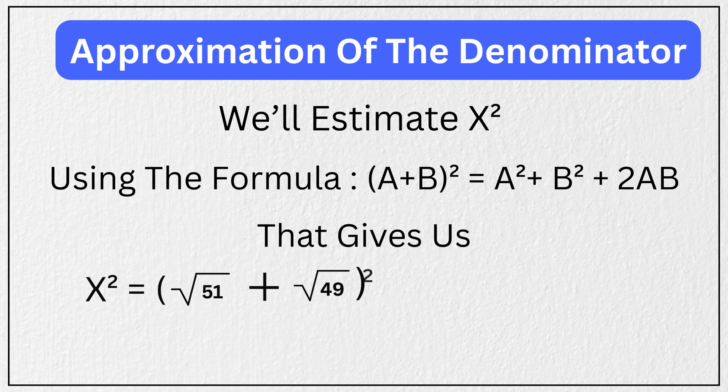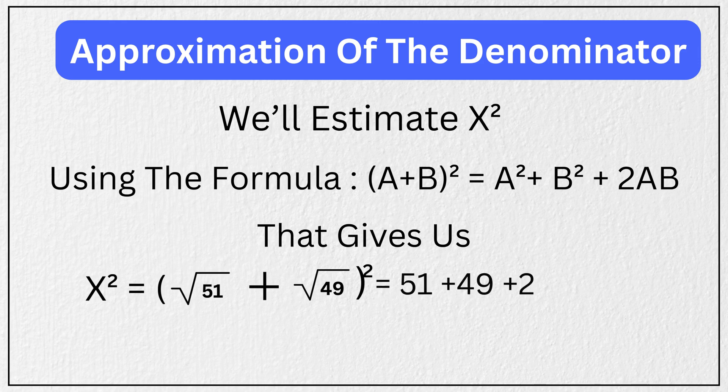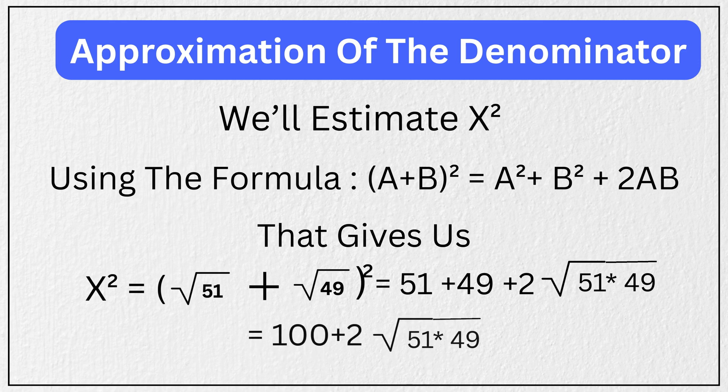That gives us x² = (√51 + √49)² = 51 + 49 + 2√(51×49) = 100 + 2√(51×49).